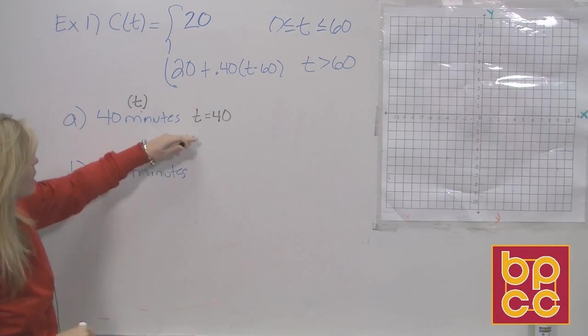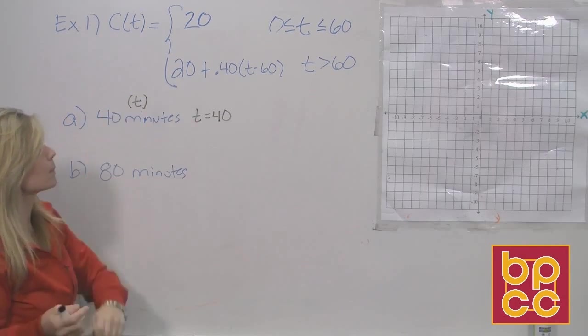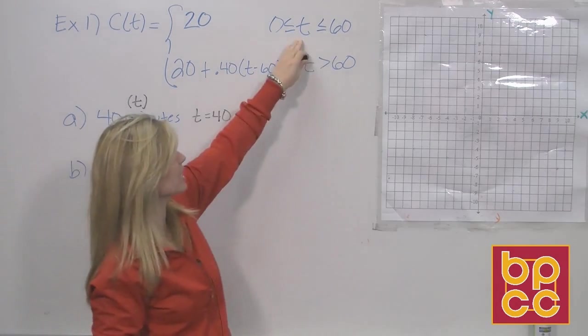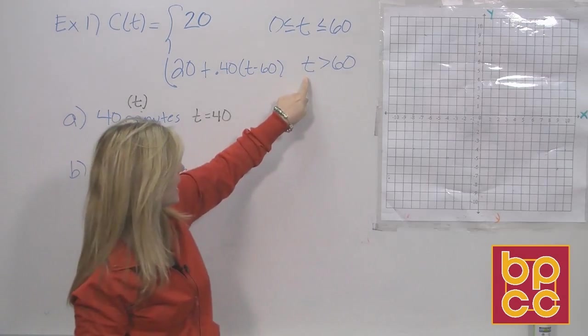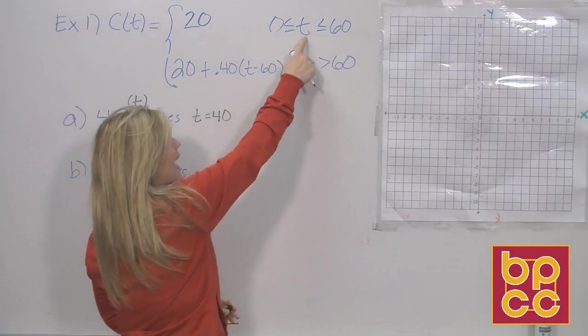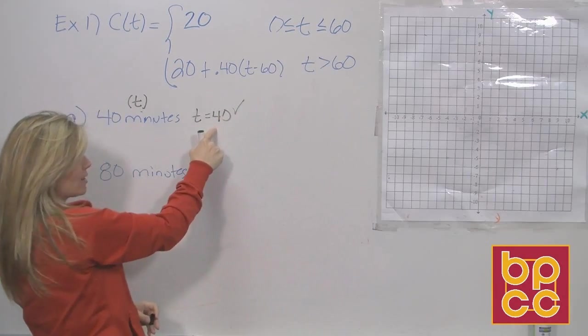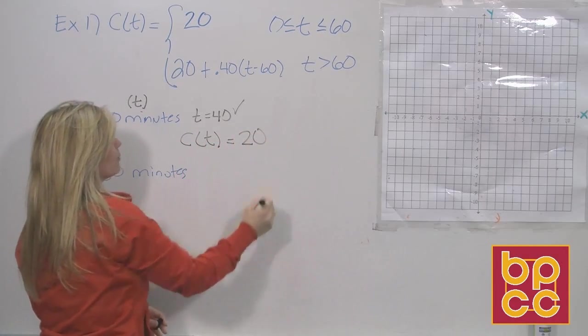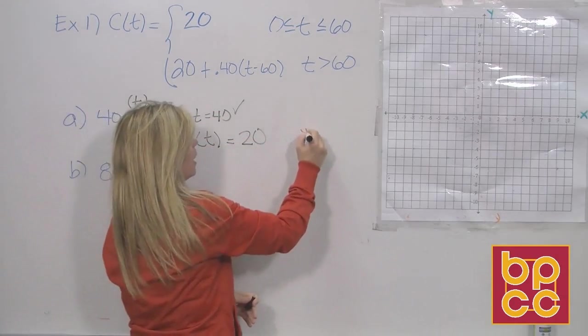Well, the question is, if I want to talk for 40 minutes, what piece of the function am I looking at? The top piece or the bottom piece? The way you'll know which piece of the function you're looking at is you'll look over here at the conditions or the restrictions. Your time for talking is 40 minutes. Is that greater than 60? No. So you're not looking at that bottom piece. Is that time 40 minutes between 0 and 60? Yes, it is. So for your cost, you're looking at the top piece. Well, it says c of t equals 20, which means if you talk for 40 minutes, you're paying that flat fee of $20.